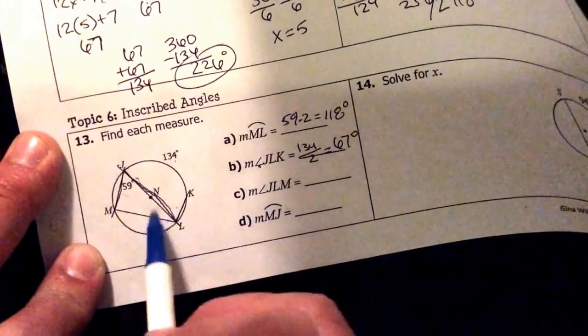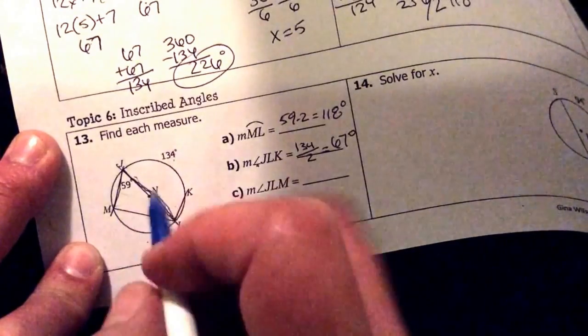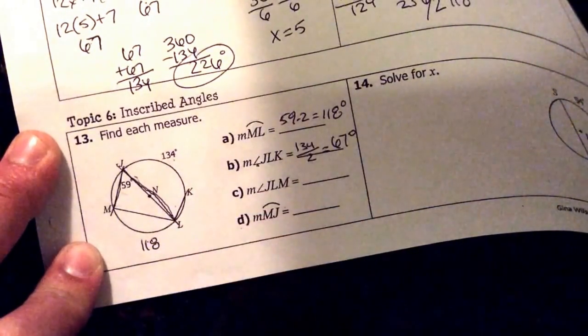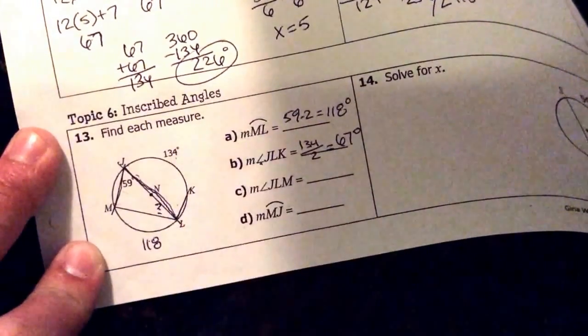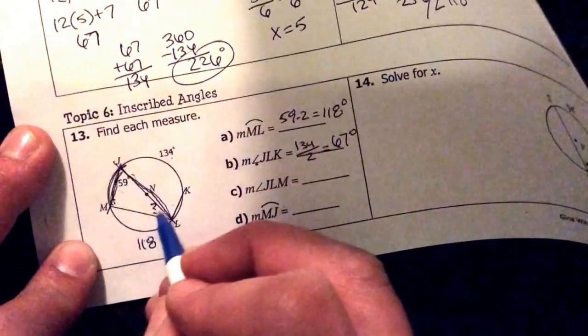Now if I want JLM, JLM right here. Well, let's figure that out. We did say before that this is 118. And I need this angle right in here, which makes this intercepted arc right here. I need to know this intercepted arc to get this angle.